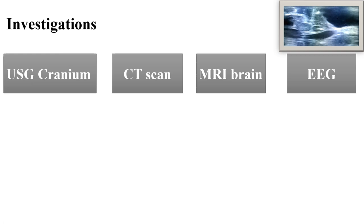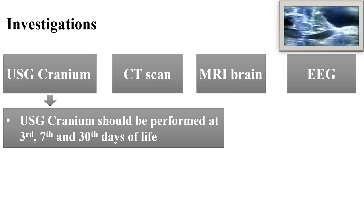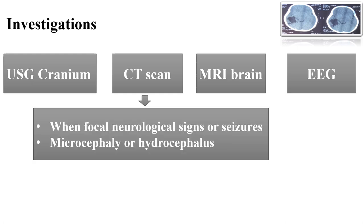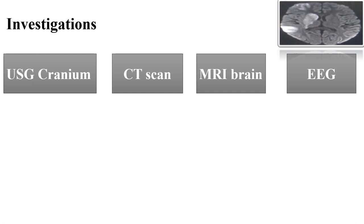In neuroimaging: USG cranium should be performed in neonates; it is very useful to detect intracranial hemorrhage, hydrocephalus, and periventricular leukomalacia in preterm newborns, and hypoxic-ischemic injury in cortical, subcortical region, thalami, or basal ganglia in term newborns. Serial USG should be performed on the third, seventh, and thirtieth days of life in NICU. CT scan is not routinely indicated but is performed when focal neurological signs, focal seizures, microcephaly, or hydrocephalus are present.